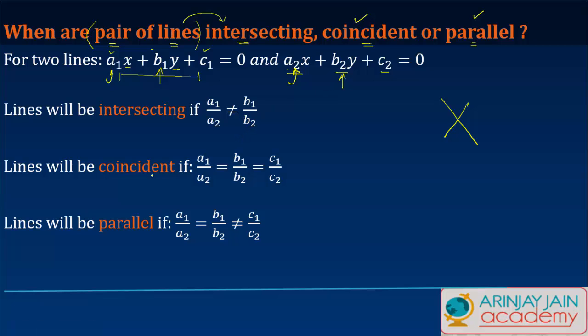The lines will be coincident—coincident means they are coinciding—if a1/a2 equals b1/b2 equals c1/c2. Graphically they will look something like this: one line going like this, another going like this, coinciding with each other.